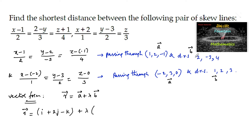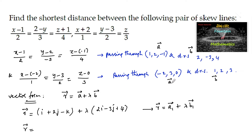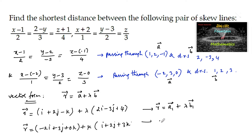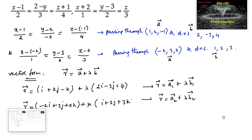The first line is r̄ = a₁ + λb₁ where b₁ = 2i − 3j + 4k. The second line is r⃗ = (−2i + 3j + 0k) + μ(i + 2j + 3k), which is in the form r⃗ = a₂ + μb₂. Since we know these are the two skew lines, the shortest distance between them can now be found.